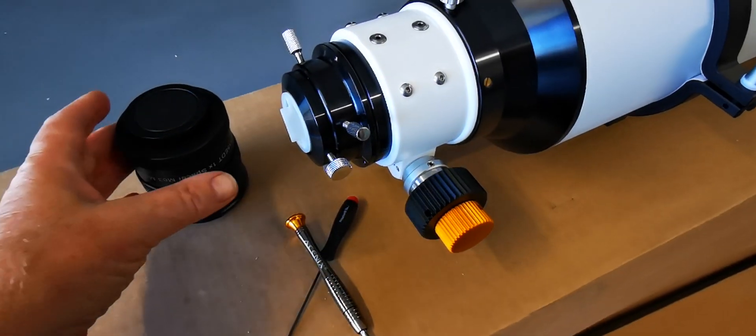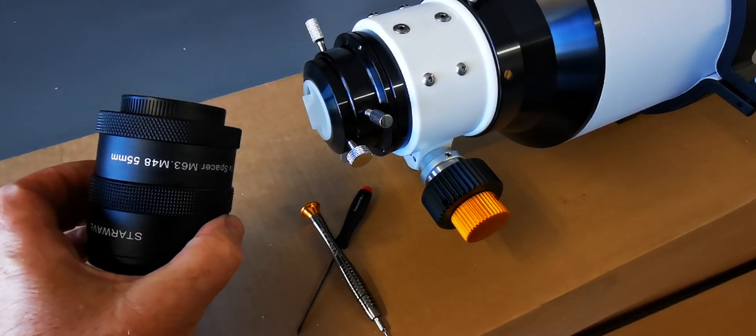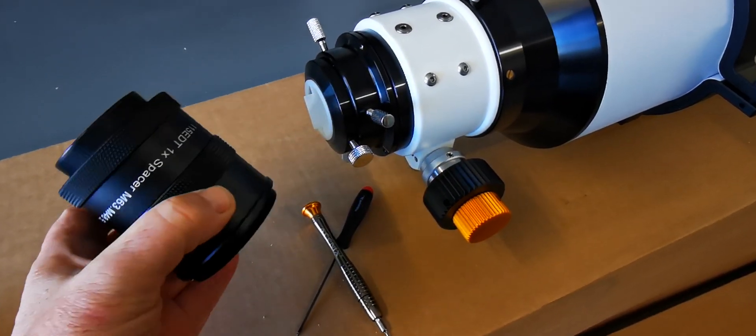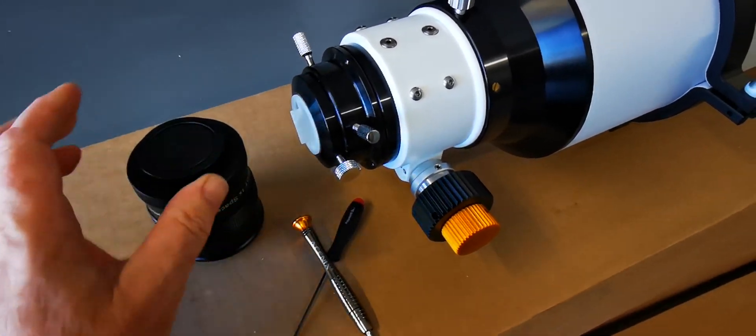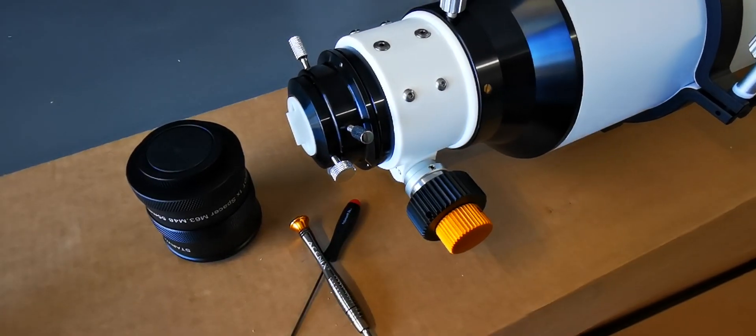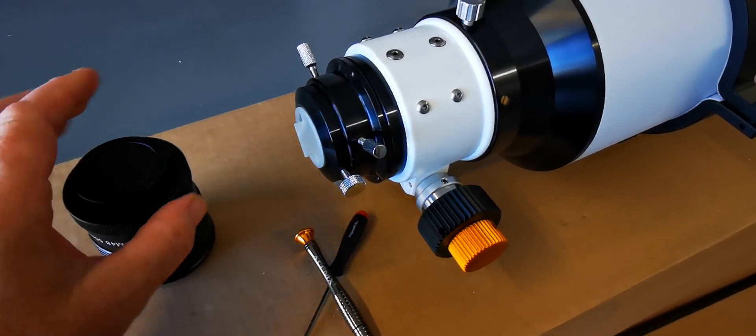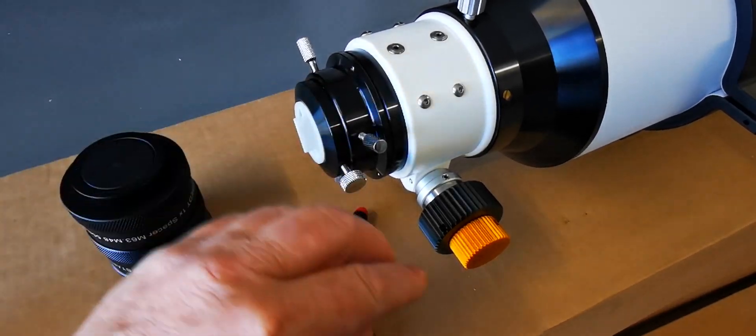Okay, just a quick video to show you how to fit the new M63 flattener or reducer onto the Ascent focusers. These are the white focusers. First thing you need to do is around here you'll see some grub screws.